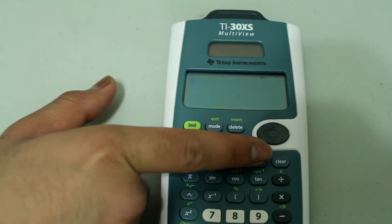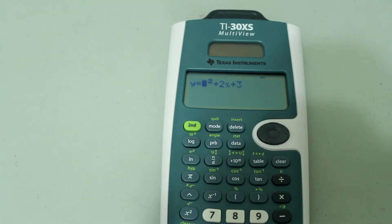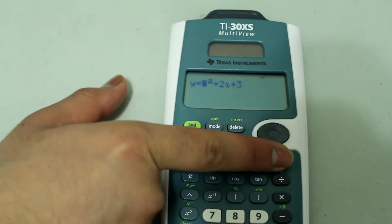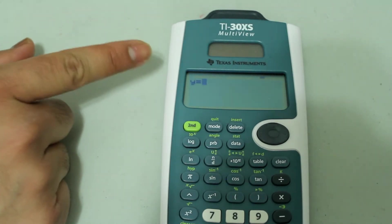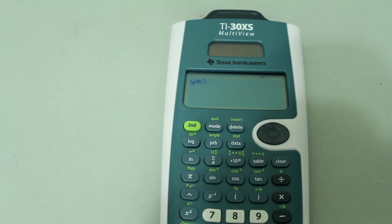First, press the table button and this will show up. I have something entered in there already and I'm going to clear that out. This is what your screen should look like. This is where you would type in the equation for the table.